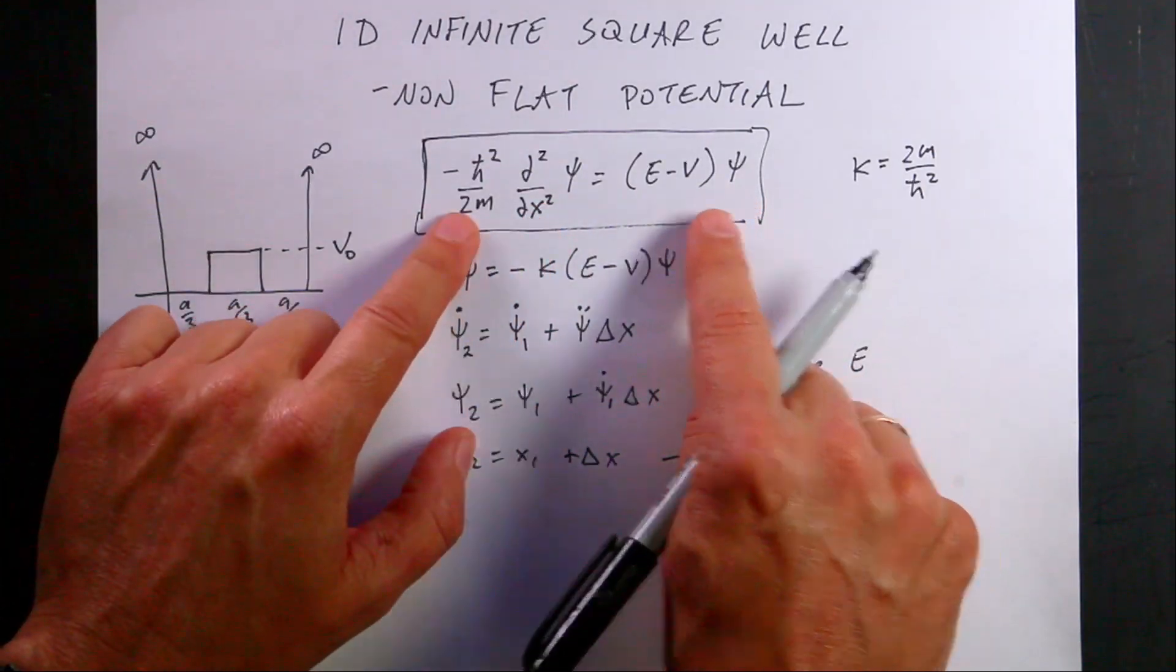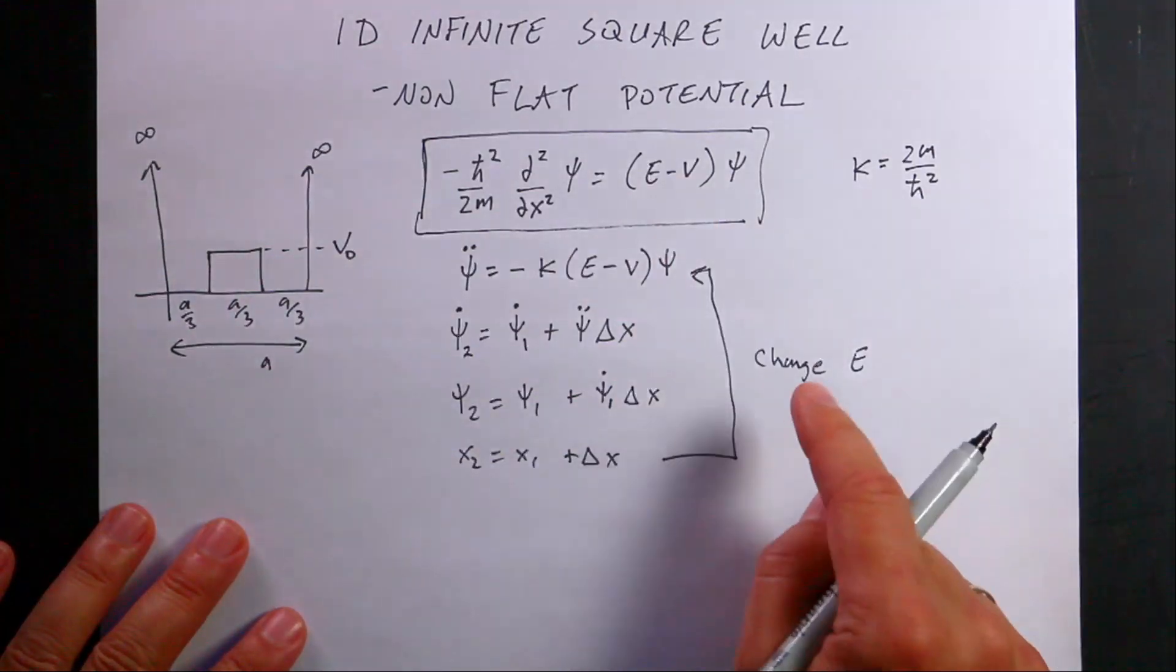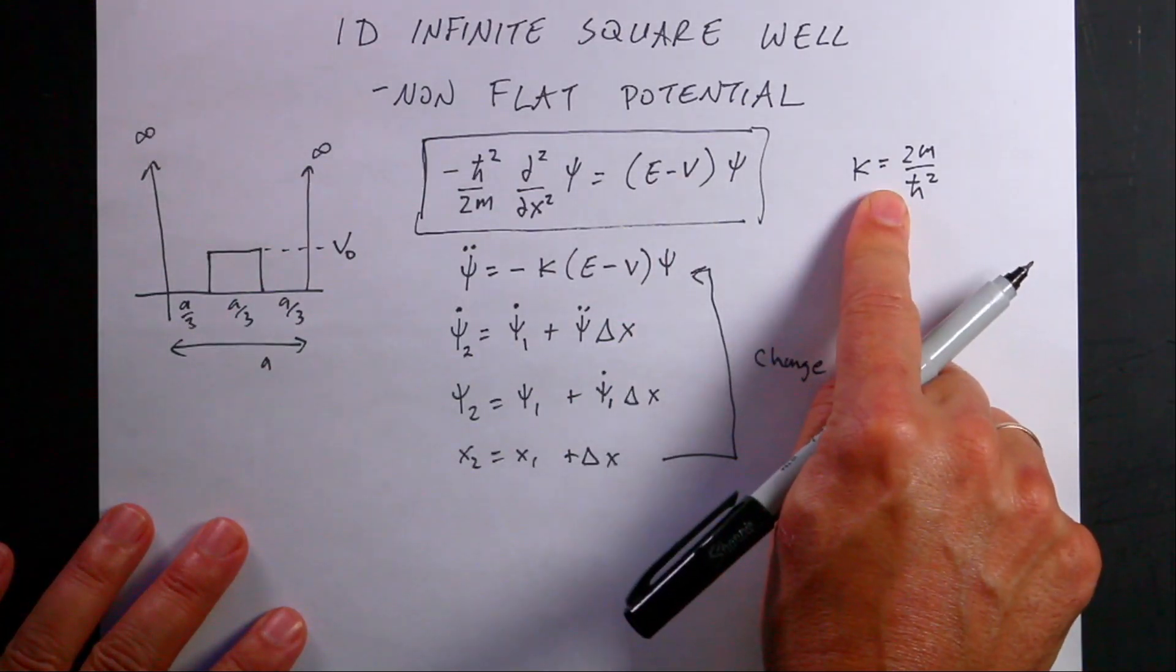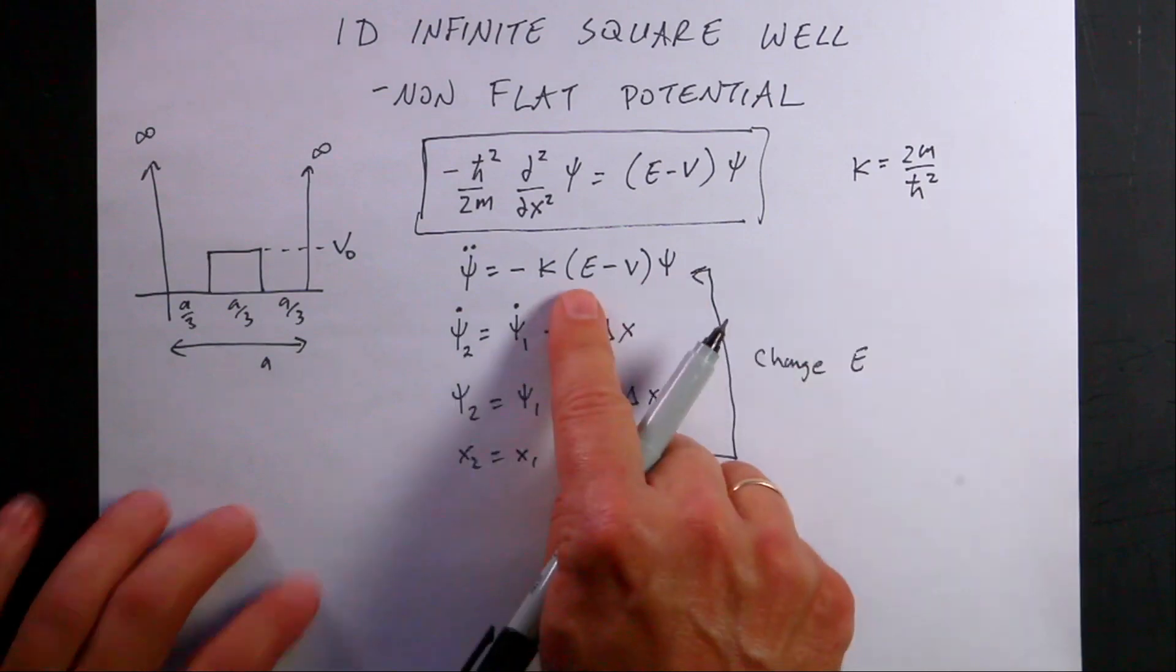So it's a relationship between the second derivative of psi and psi. And then we have a constant, we have an energy, and we have the potential. Now, just to make things easier, I'm going to say that k is 2m over h bar squared so that I actually get this.